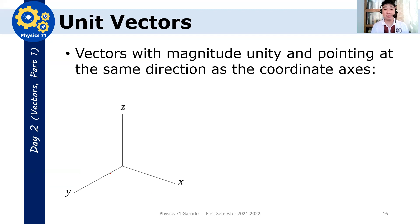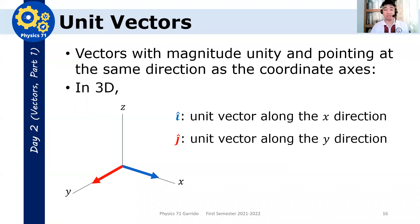Same thing in 3D, we can also define unit vectors in 3D. As usual, the unit vector along the x direction is your i-hat, the unit vector along the y direction is your j-hat, and of course, after i and j comes k. So you have k-hat as the unit vector along the z direction.